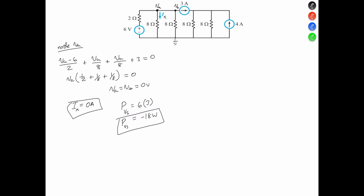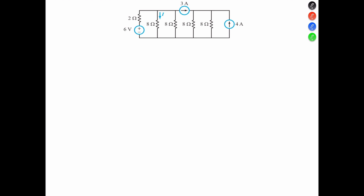Now to determine if the 4-amp current influences the circuit in any way, we can break it down and analyze the circuit. If we know that at this terminal V there's going to be 0 volts, let's call terminals VA and VB — we don't know the voltage at those terminals. We want to find out if the 4 amps influence the circuit, so we want to know what's the current leaving from VB. Let's call this I1 and this I2. Let's find the voltage so we can find the currents flowing through the 8-ohm resistor to the right of the 3-amp current source. We know that VA is going to equal VB.